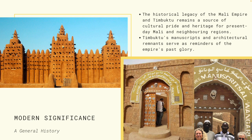We must bear in mind that many African structures were destroyed by European invaders. For example, the Benin Empire once had the largest moat enclosing an empire — even longer than the Great Wall of China — but it was largely destroyed by the British. It is therefore beautiful to see that these Mali structures still survive and can be visited today.